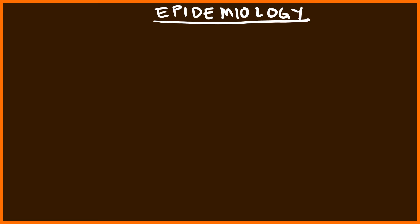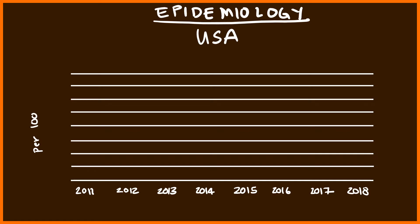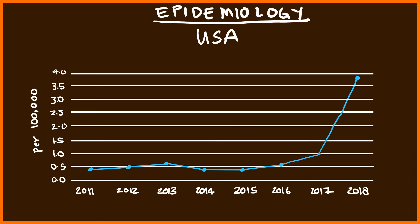Let's look at epidemiology specifically in the United States. Looking at a graph from 2011 to 2018 with incidence per 100,000 people on the y-axis, the rate of Hepatitis A is fairly low, coming in at less than 0.5 in 2011 and 2012. However, in 2013, there is an uptick attributed to an outbreak in multiple states, particularly California, of Turkish pomegranates.